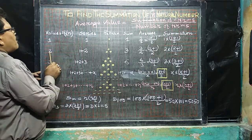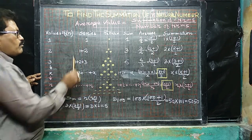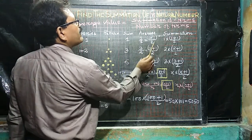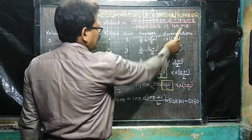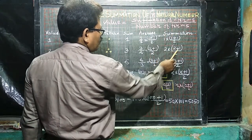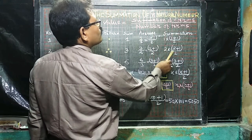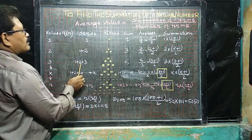When values of n is 2, the series is 1 plus 2. As we are adding 1 plus 2, that is 3, 3 by 2, 2 plus 1, divided by 2. It can be written as, in the form, the summation is 2 into 2 plus 1, divided by 2. That is equal to 3.